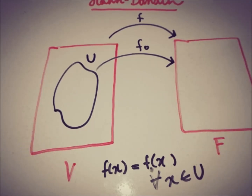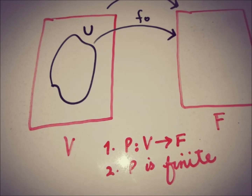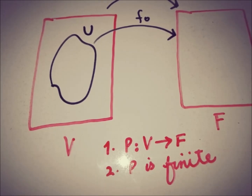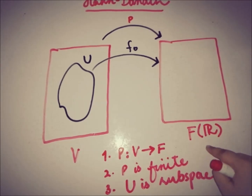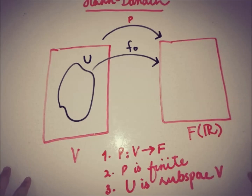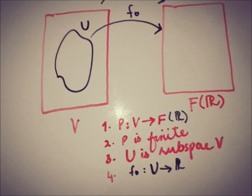Now we will talk about the statement of the Hahn-Banach theorem for the real space. The very first thing in the statement is that P is a finite convex functional from V to R, where V is a linear space. The second thing is that U is a subspace of V. We also have a linear functional F₀ from U to R.